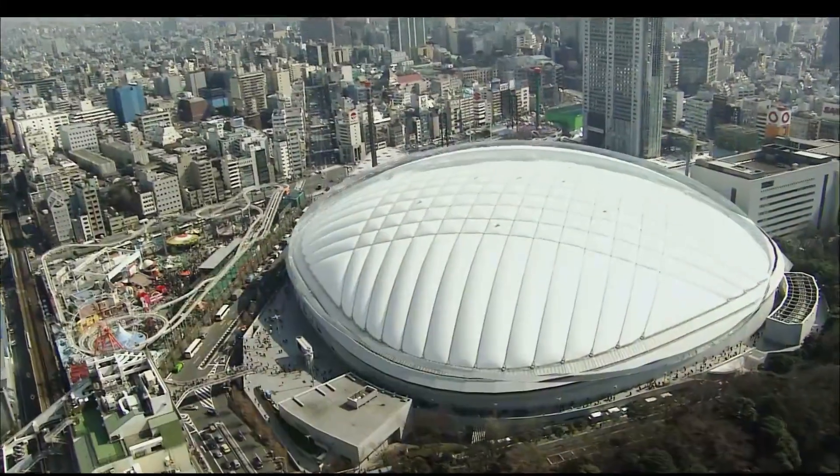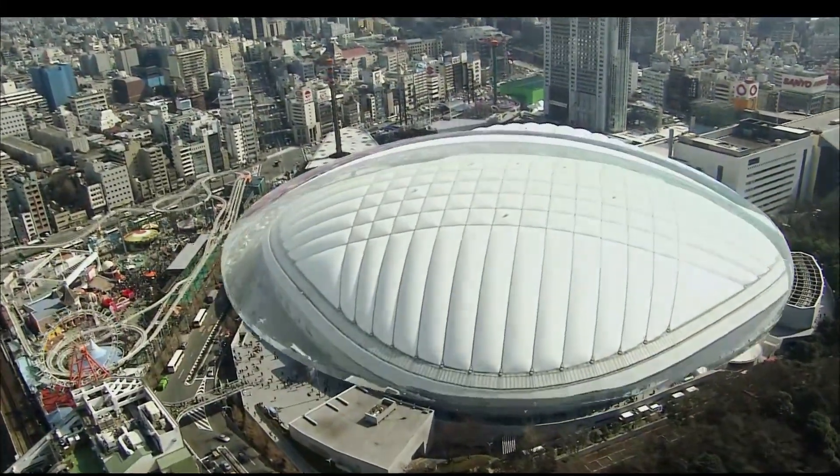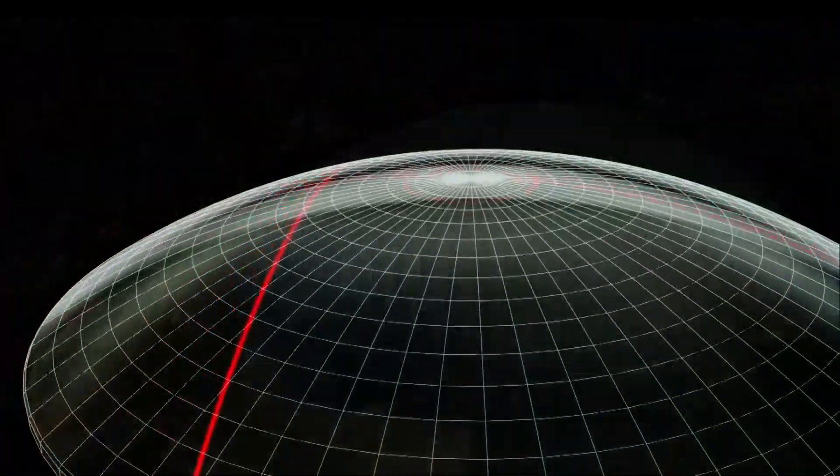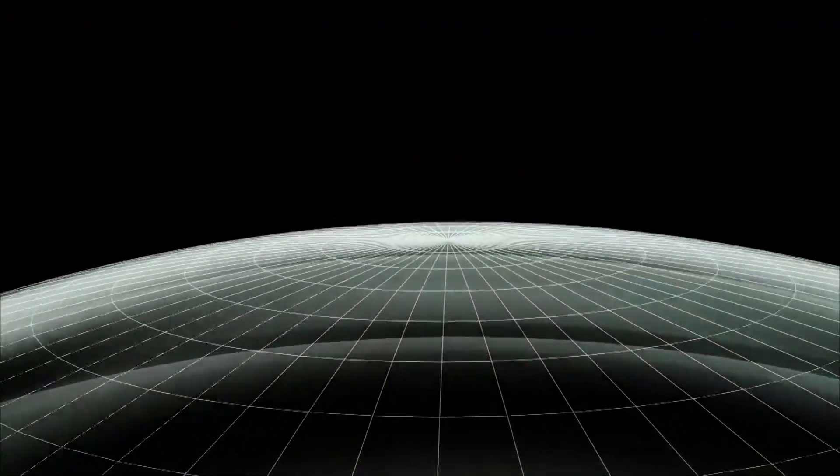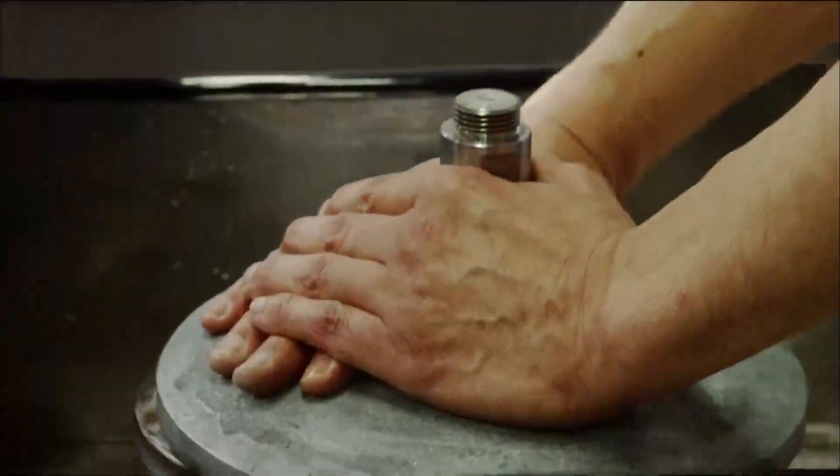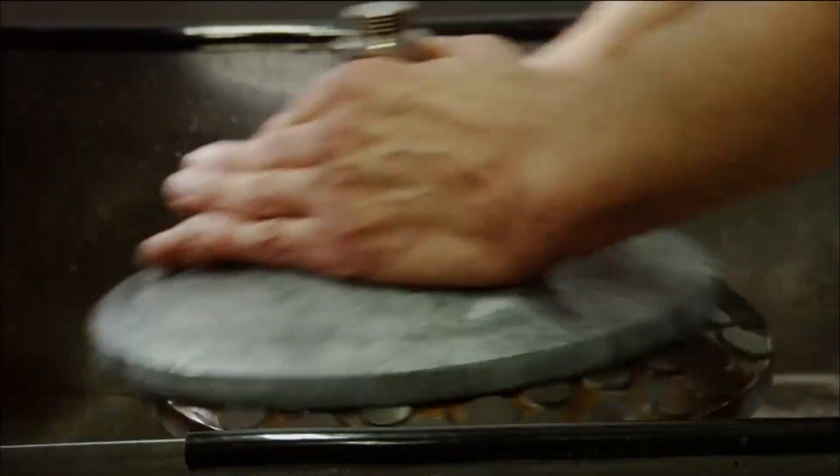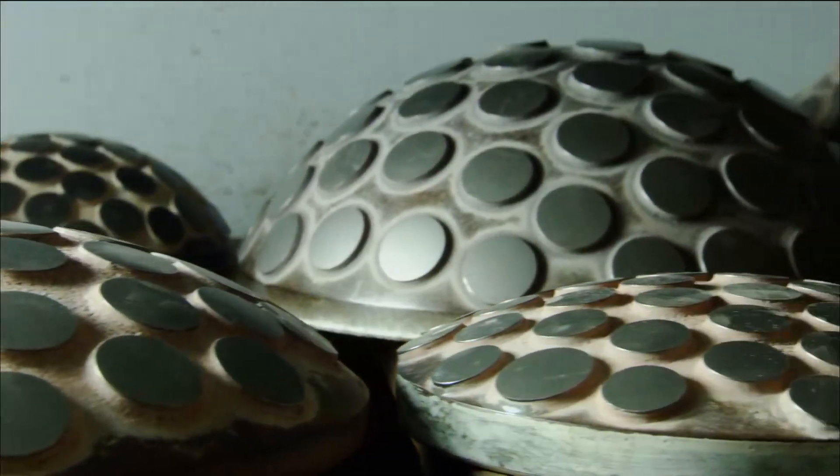For example, a polished lens enlarged to the size of a baseball field would have deviations in surface accuracy less than the thickness of a postcard. The use of a polishing dish enables a level of polishing precision exceeding one one-thousandth of a millimeter.